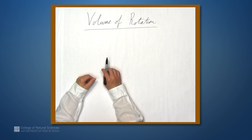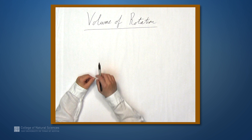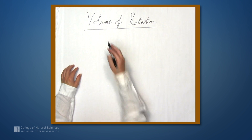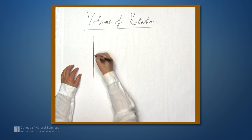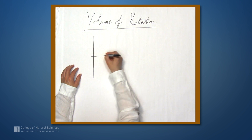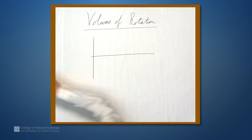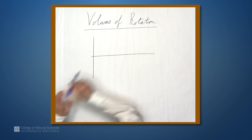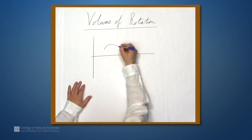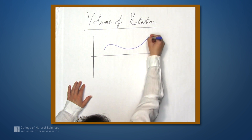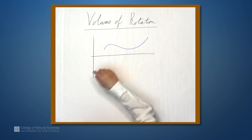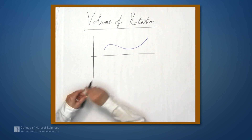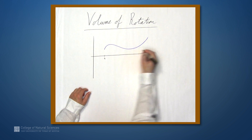We're here at the example table, and in this video we're going to be talking about the volume of rotation. So what do I mean by that? Let's sketch the graph of a function, just something like this. And we're going to take this function between a and b,